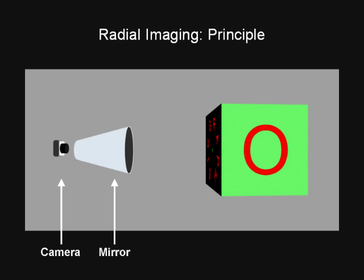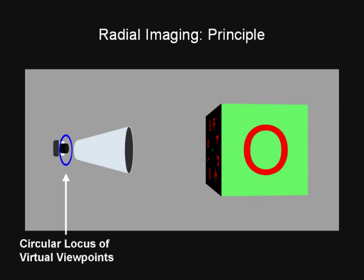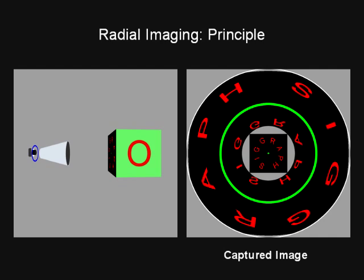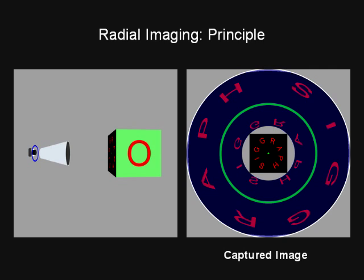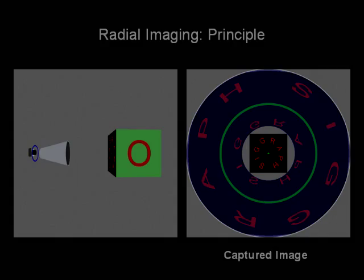The scene is captured from the camera's center of projection as well as a circular locus of virtual viewpoints. An image captured by this system looks like a doughnut, where the scene is imaged directly by the camera in the center, while its reflection, corresponding to the virtual viewpoints, appears in the annulus.